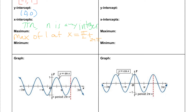Next let's take a look at our minimum value. Our minimum value is going to be negative 1 — that's the smallest we go on our graph. Just like the maximum, we'll have an infinite number of minimum values. The first minimum in the positive direction occurs at 3π/2, so our minimum is negative 1 occurring at x equals 3π/2 plus 2nπ, where n is any integer.